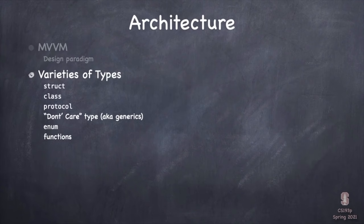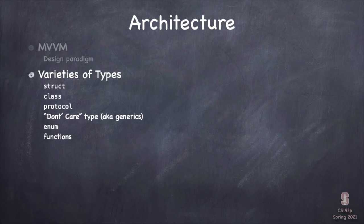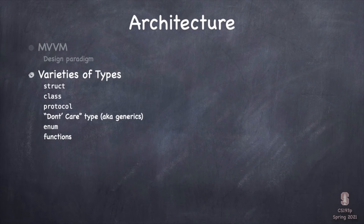Now let's take some time to talk about the Swift type system. It's really hard to truly understand any Swift code without understanding the system of types that underlie it. There are essentially six major different kinds of types in Swift: structs, like our ContentView and CardView; classes — our ViewModel is going to be a class; protocols, which are super important — View is a protocol, and so is Identifiable; don't-care types, also known as generics; enums, which are very powerful in Swift; and finally, functions are types.